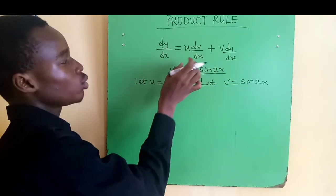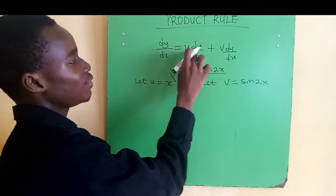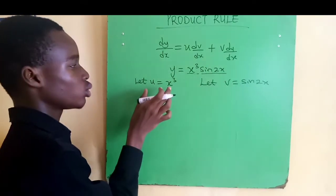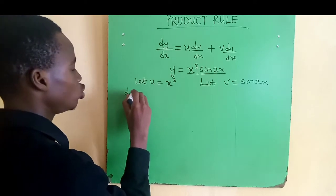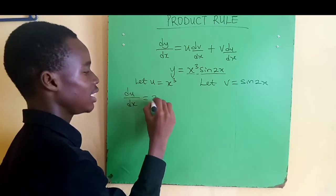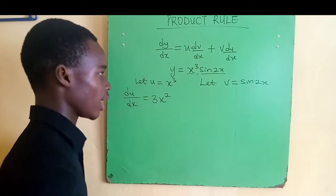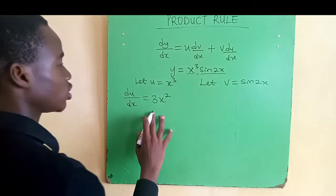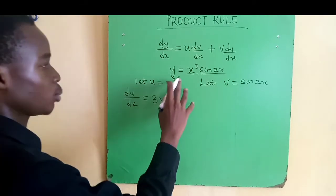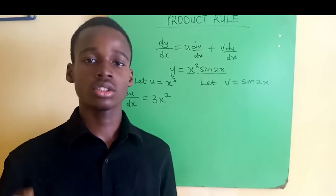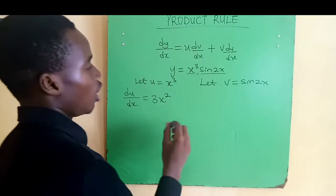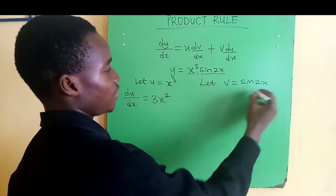Then the next thing to look for is dv/dx, it means we're going to differentiate this, and du/dx, it means we're going to differentiate this. So let's look for du/dx. How to differentiate this? We'll have 3x squared. In case you don't know how we got 3x squared, how we differentiated x cubed to get 3x squared, the link is on our description box. You can watch the video where we explain in details. And differentiating v to give us dv/dx, we have 2 cos 2x.